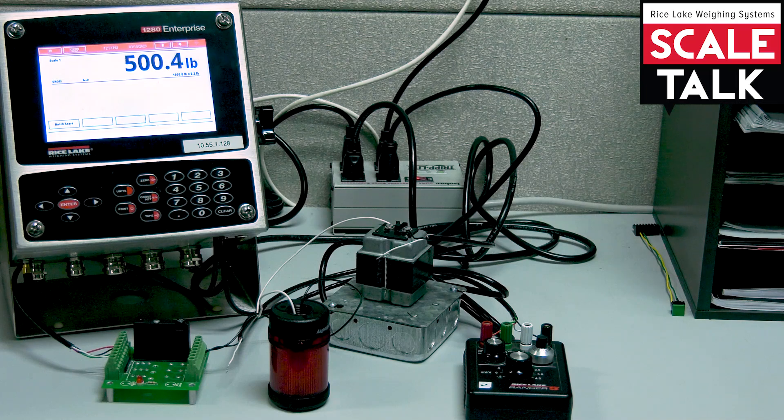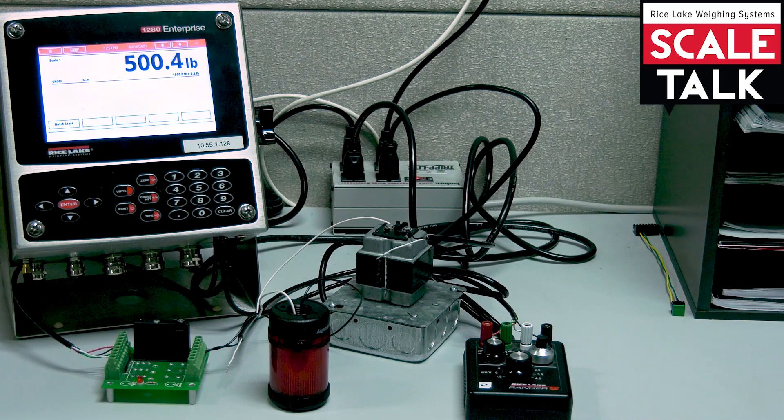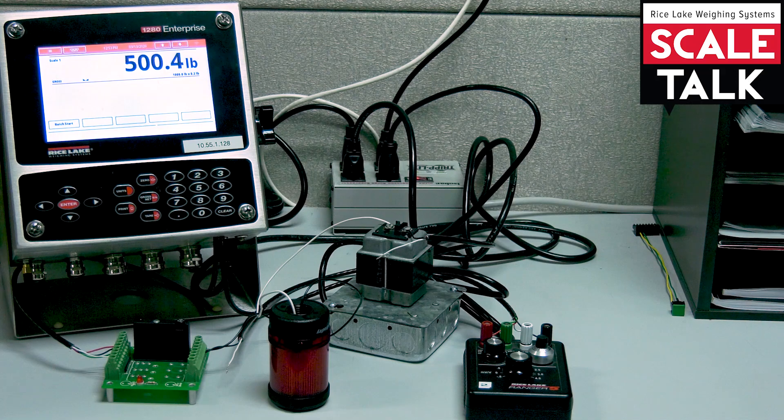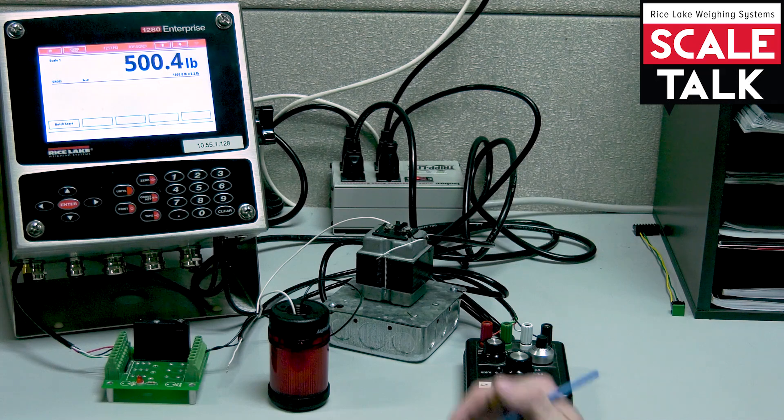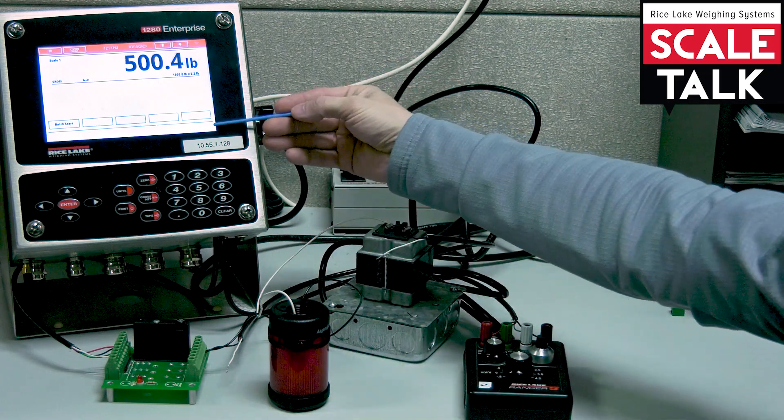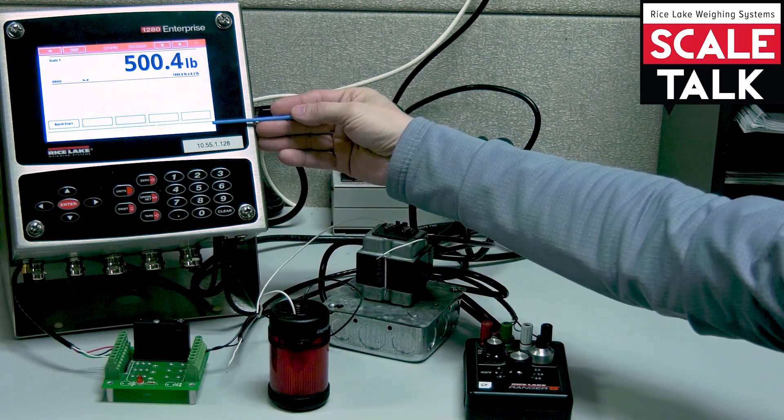So to recap, free running always being evaluated. Batching routine set points are only being evaluated while you're part of the batch routine.